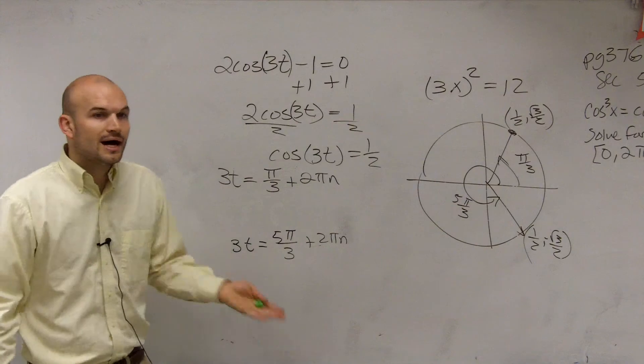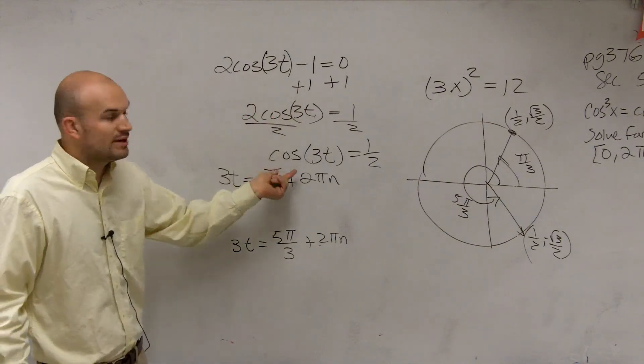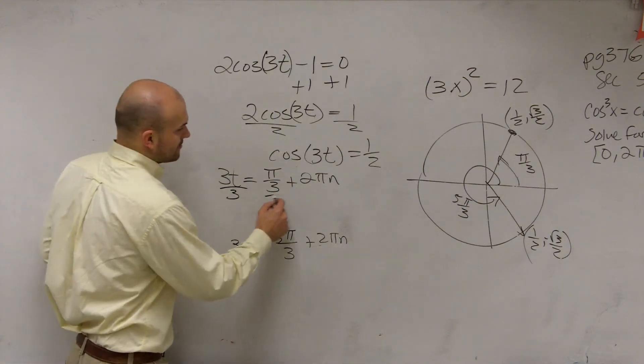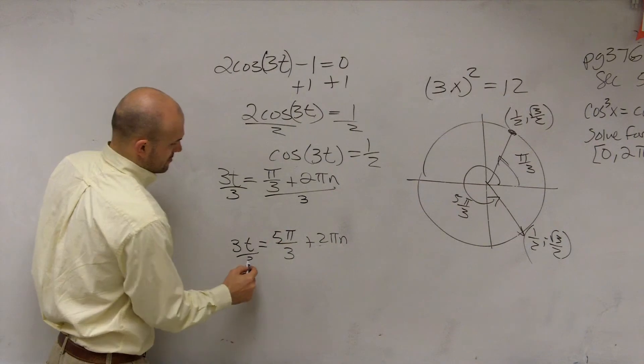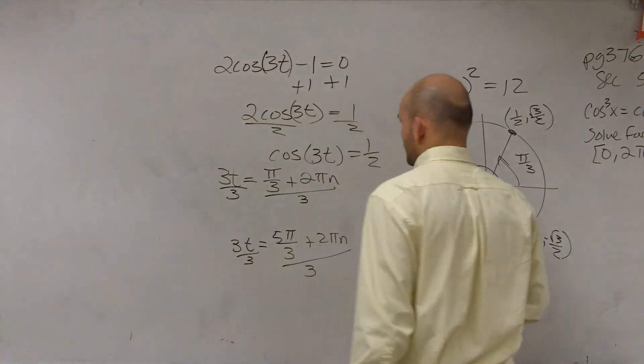All right? Now we can undo. Now that we've evaluated for cosine, now we can undo the 3. So now you divide by 3.